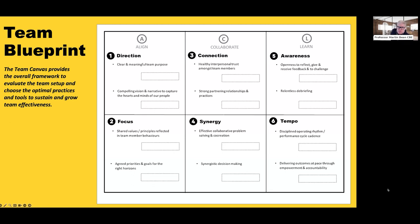Under collaborate, we talk about in number three, connection. And again, be reflecting on this minus five to plus five on where your team is at right now. So under connection, do you have healthy interpersonal trust amongst team members? Do you have strong partnering relationships and practices? Does it happen dynamically or is it forced?